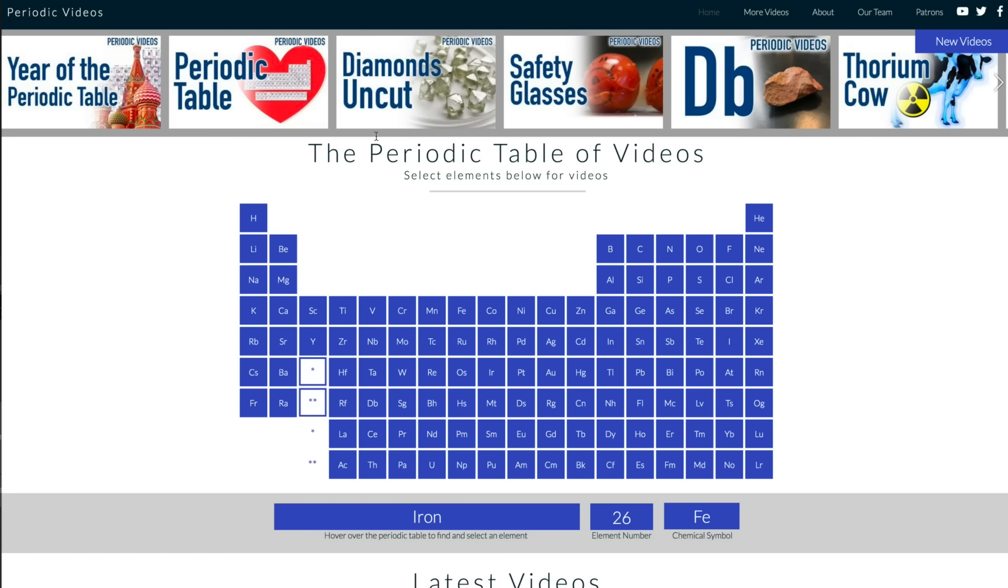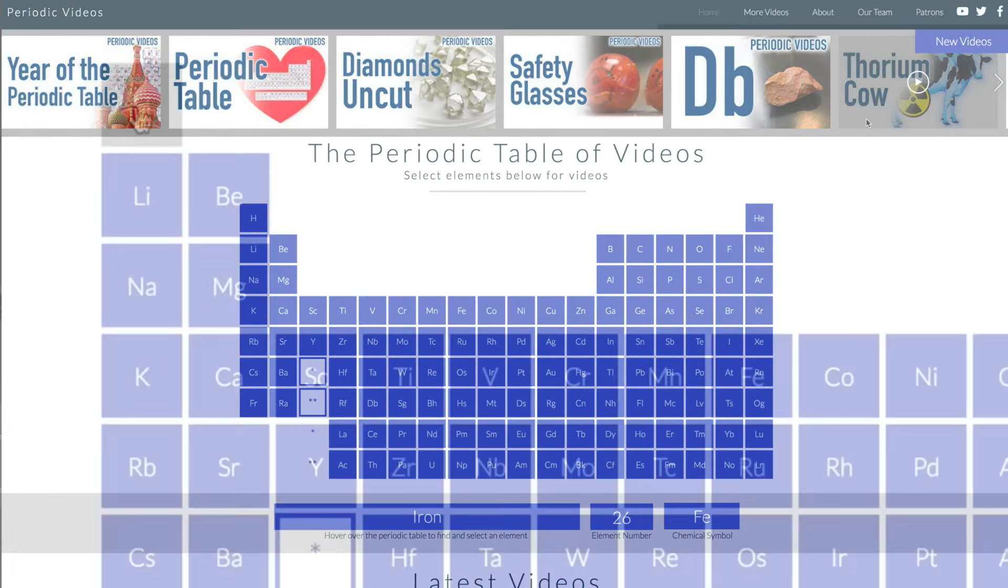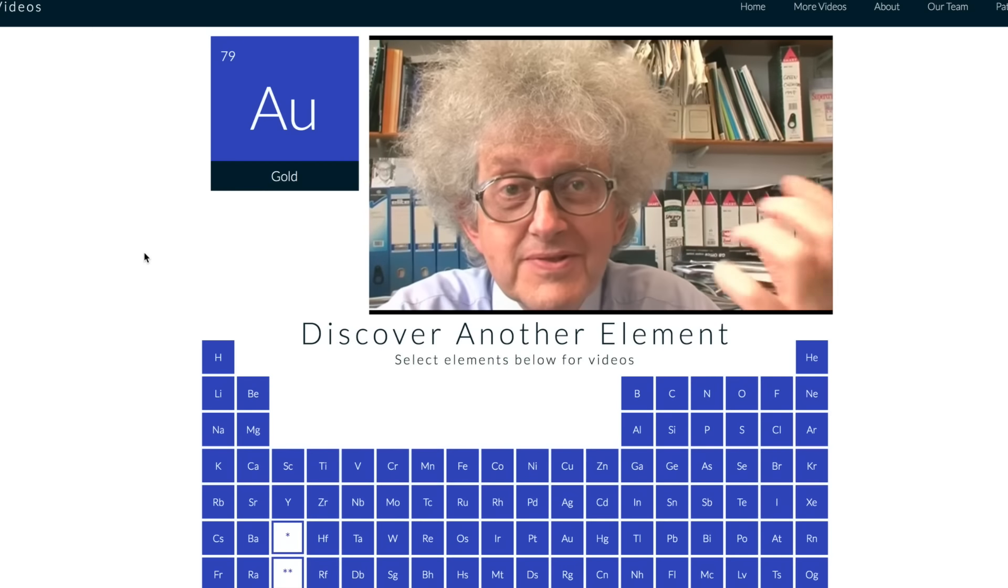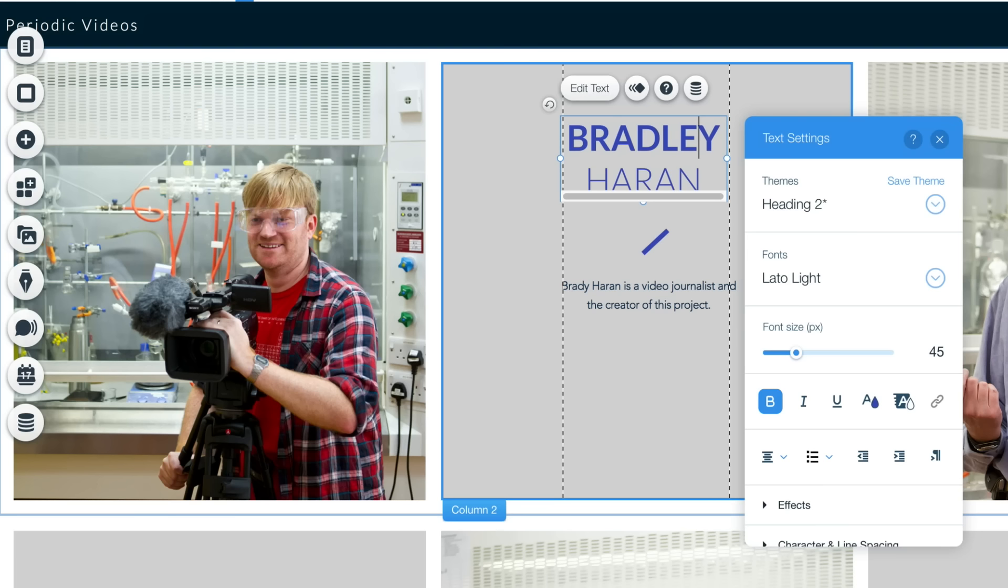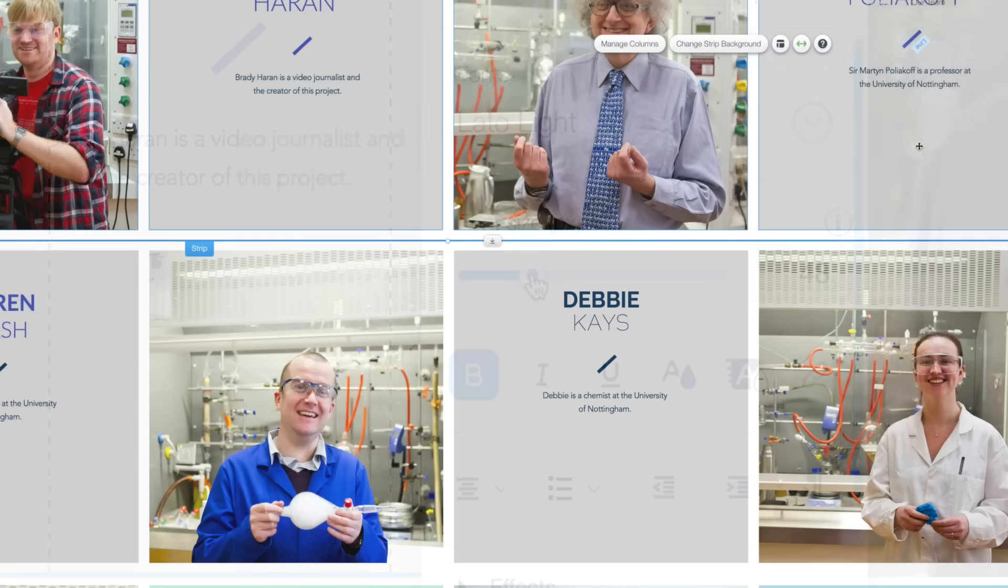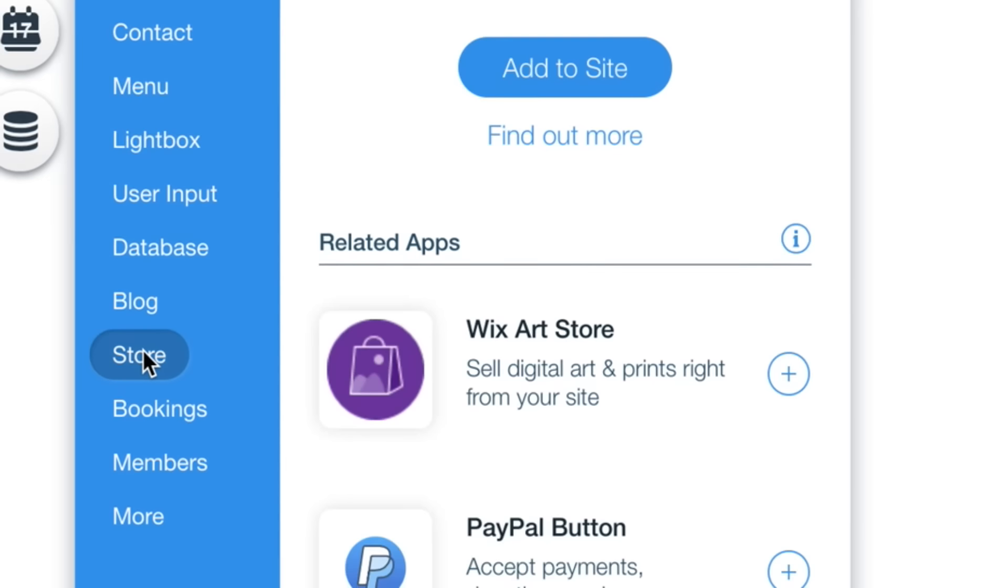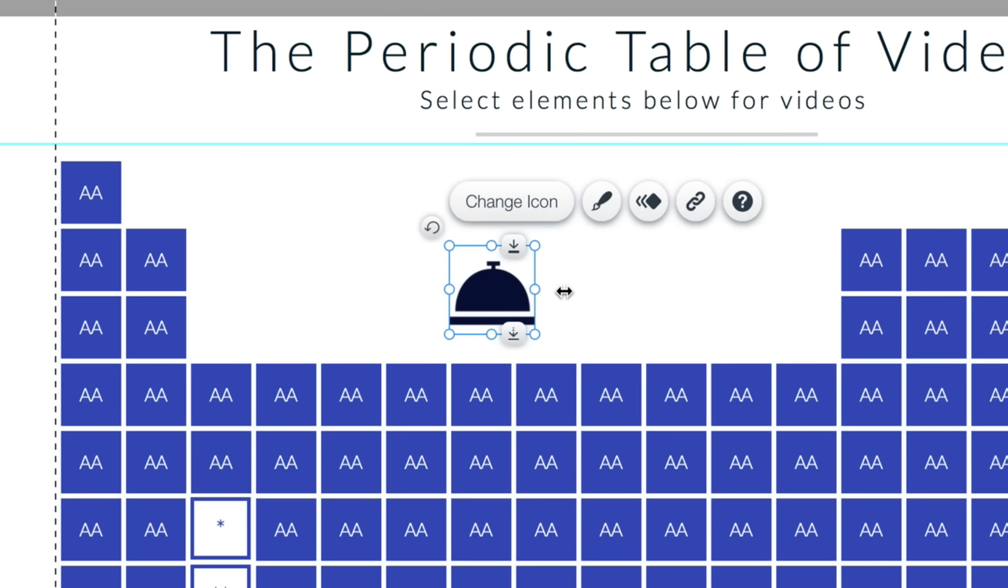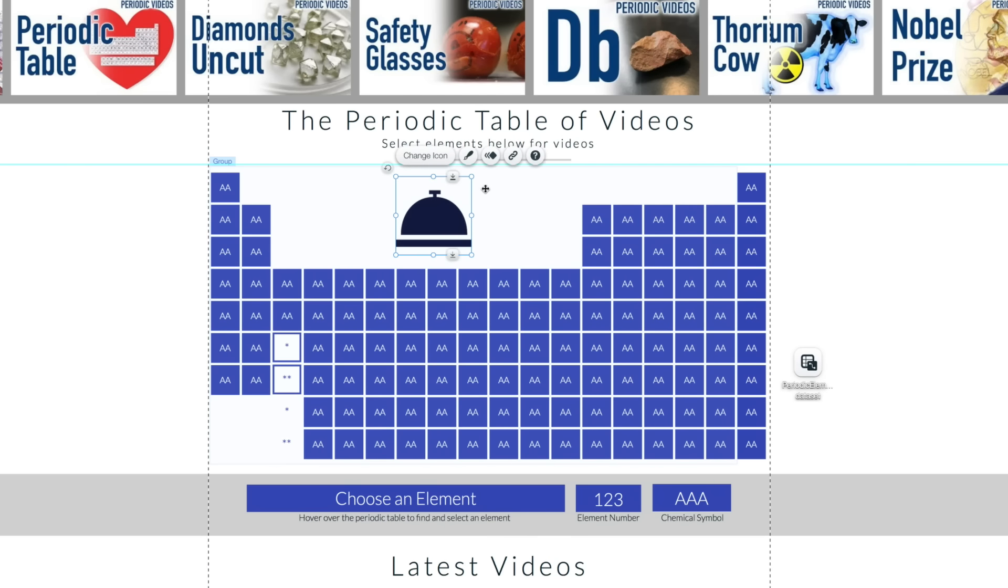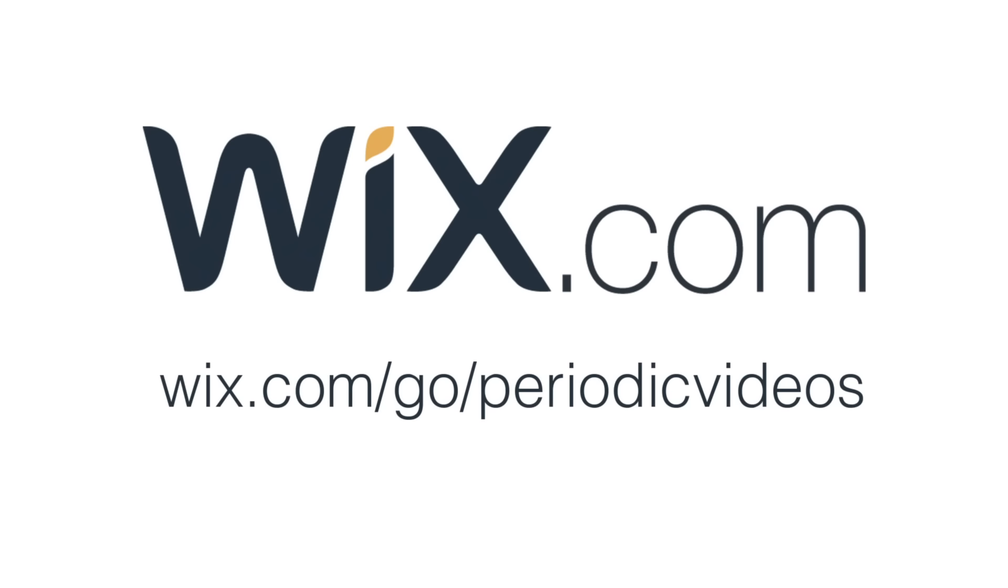This video was supported by Wix, which also happens to be who we've used to make this new Periodic Videos website. Pretty nifty, hey? And here's a little sneak peek under the hood, where we've used Wix to design, make changes, get things looking just right. I have to say I've been really impressed by just how much control you have over a Wix site. Sure, they have some templates to get you started, lots of templates actually, but there's no detail you can't fine-tune and tweak to get it just how you want it. No little bell or whistle you can't add to get your site doing what you want it to do. Just imagine what the Periodic Table might have looked like if Dmitry Mendeleev had used Wix. Now to check them out yourself, go to wix.com slash go slash periodic videos. There's the address on the screen. And our thanks to Wix for supporting this episode.